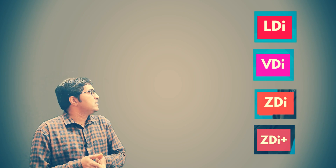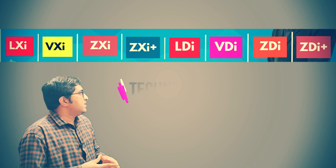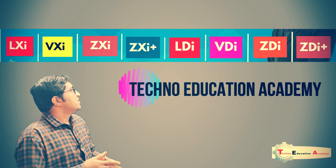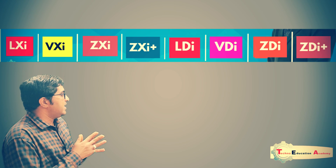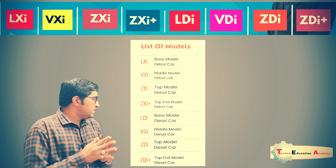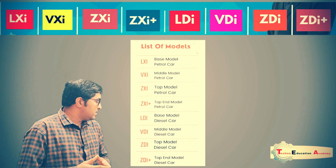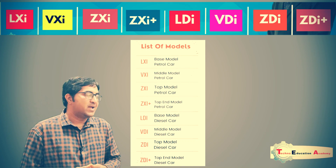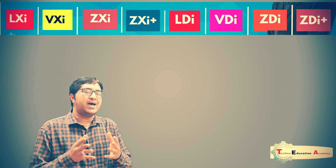What is the difference between LXI, VXI, ZXI, and ZXI Plus? The prefix L, V, and Z represents the variant of the model. L means base model — it is a simple model of the car. V means full optional model where some options are available, while Z is an added features model, and Z Plus means it is the top and more featured model.